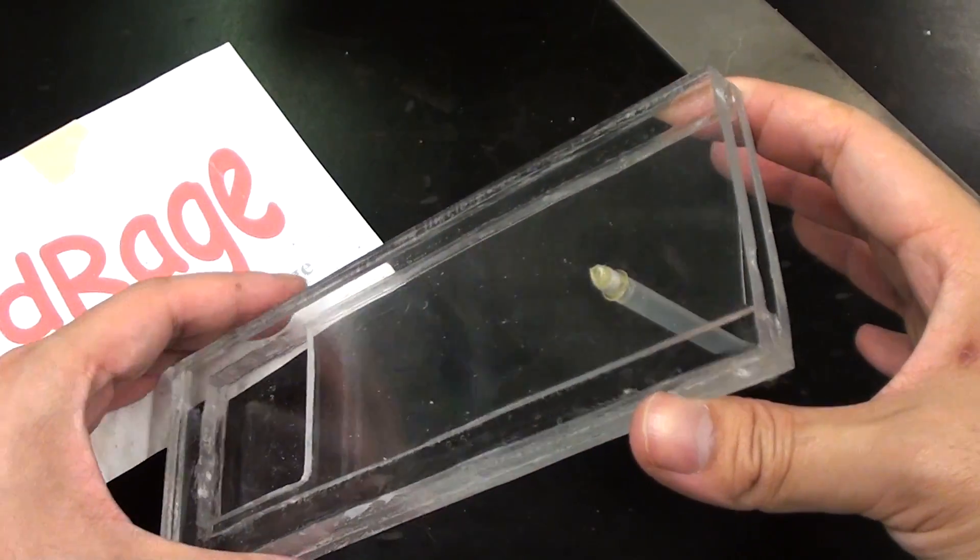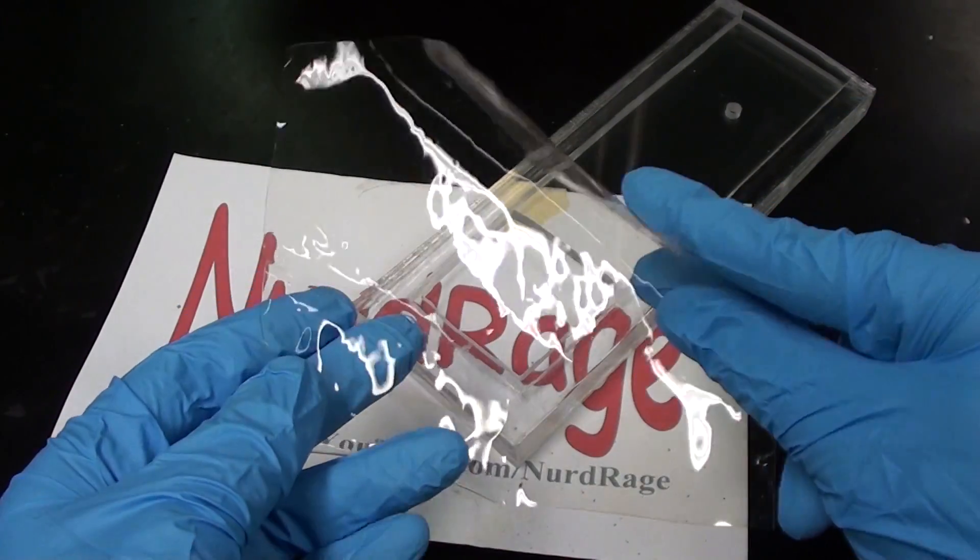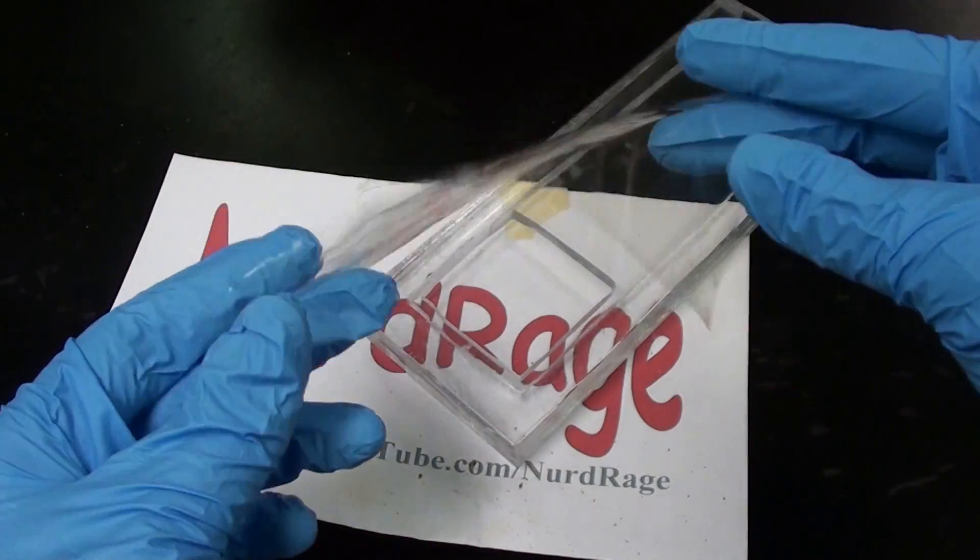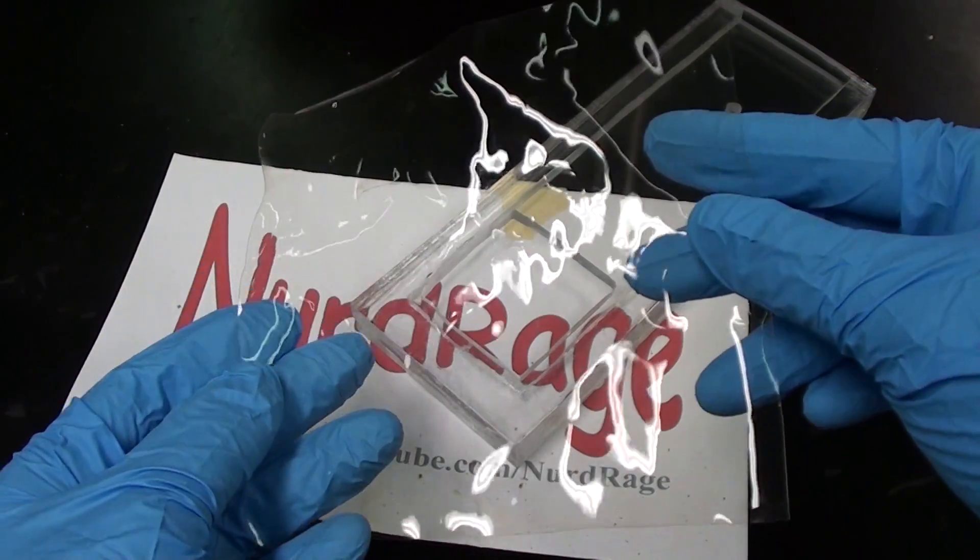All that's left now is to install the membrane. So here is the big reveal, the famous Nafion membrane, which is incredibly boring and looks exactly like plastic wrap.